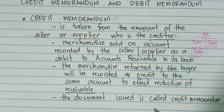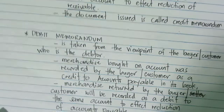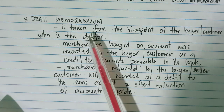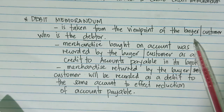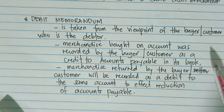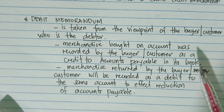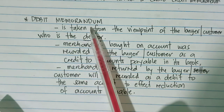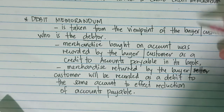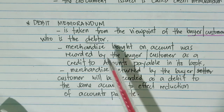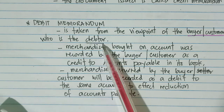The document that will be issued is called the credit memorandum. Next, we have debit memorandum. Debit memorandum is taken from the viewpoint of the buyer or the customer — unlike credit memorandum which is from the viewpoint of the supplier or creditor. The debit memorandum is in the viewpoint of the buyer or customer, and the buyer or customer is the debtor.